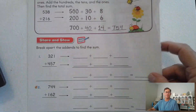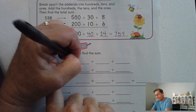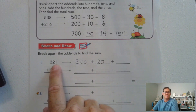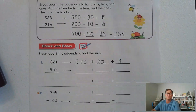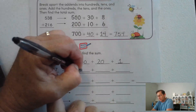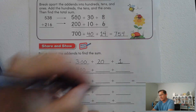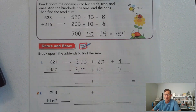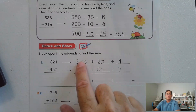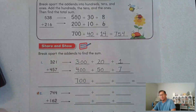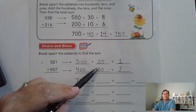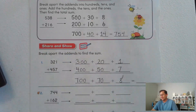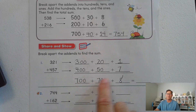Number one: let's break it into its place values. We have three hundreds — value is three hundred. We have two tens — value is twenty. We only have one one — that's worth one. Four hundred fifty-seven: four in the hundreds place is four hundred, five in the tens place is fifty, and seven ones is seven. Add up the place values: four hundred plus three hundred is seven hundred. Fifty plus twenty is seventy. Seven plus one is eight. Put it together: seven hundred seventy-eight.